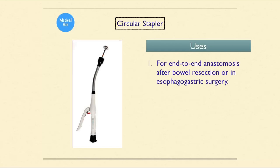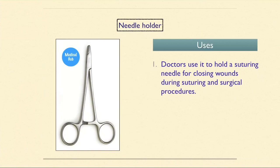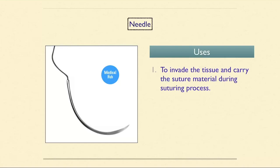The circular stapler is used for end-to-end anastomosis after bowel resection or in esophageal-gastric surgery. Next is the needle holder, which doctors use to hold a suturing needle for closing wounds during surgical procedures.